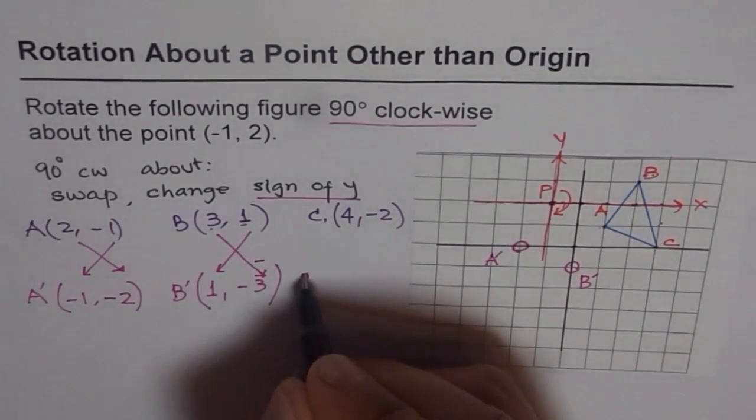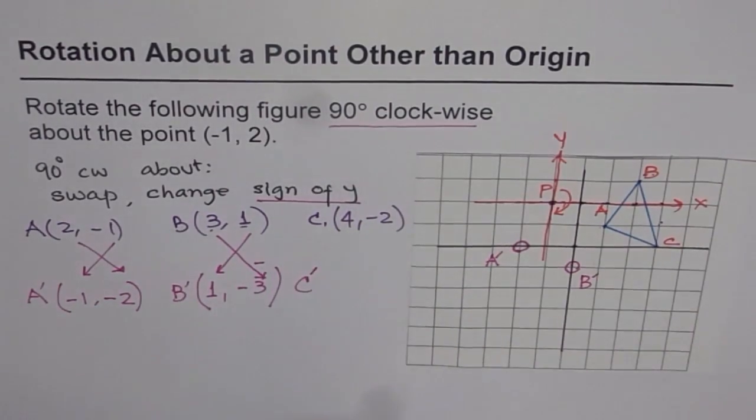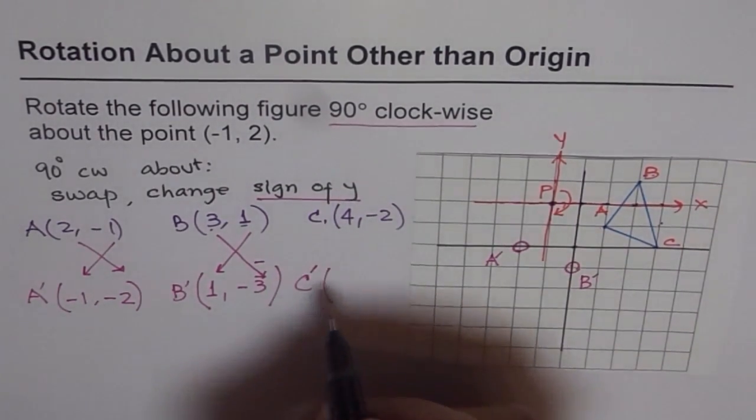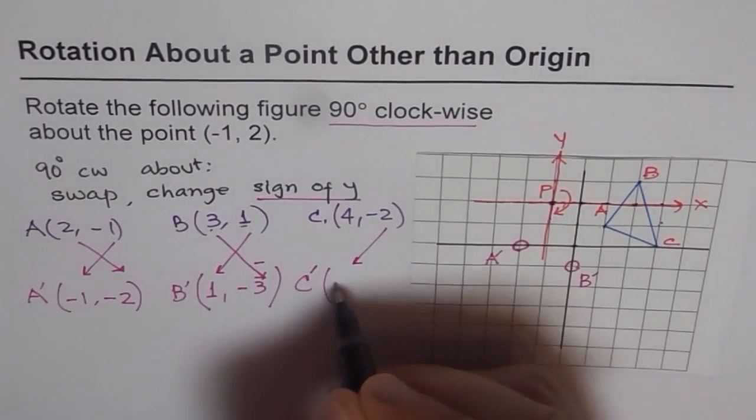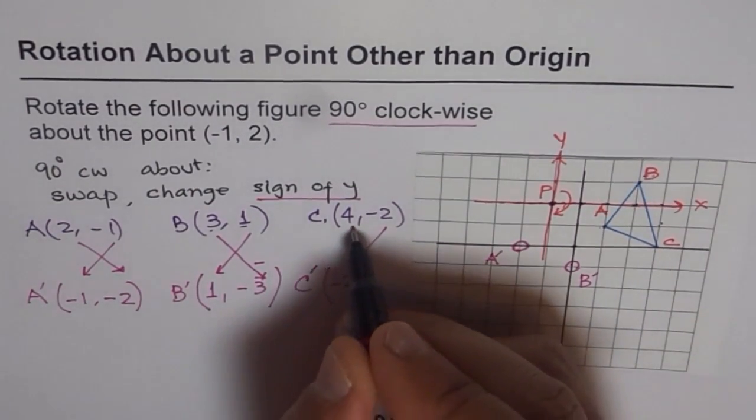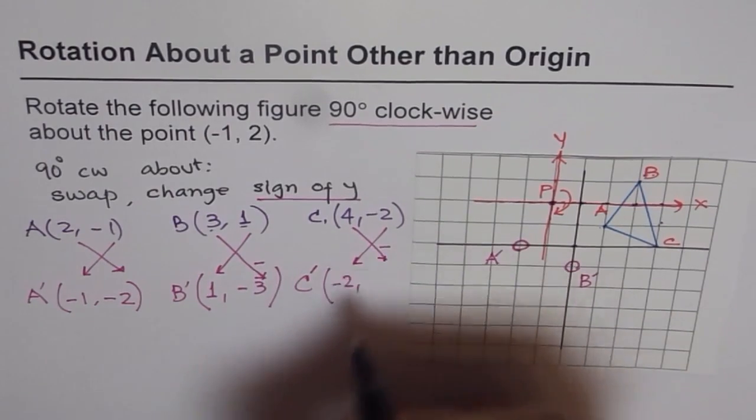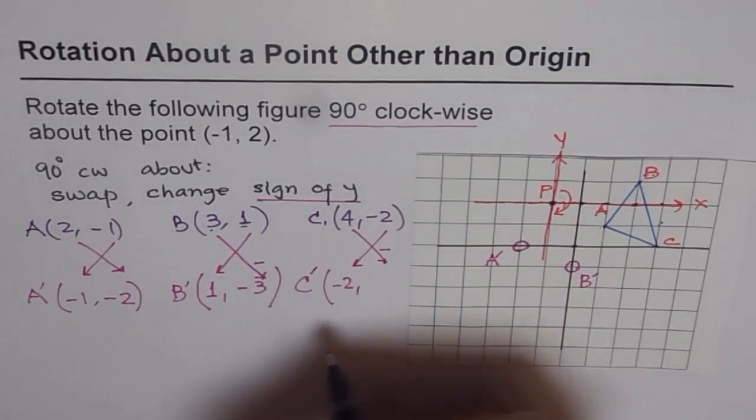How about the image of C? So image of C, let's write down as C'. It will be as, let's interchange, so we get minus 2 and here we will interchange and also change the sign. So we will make negative of whatever it is.